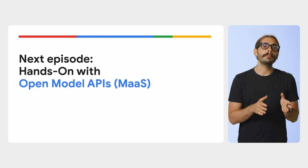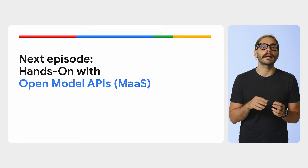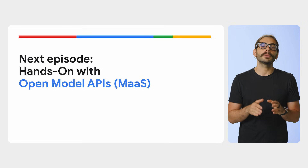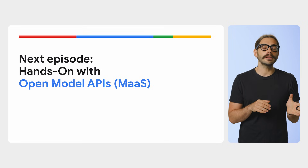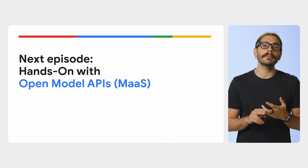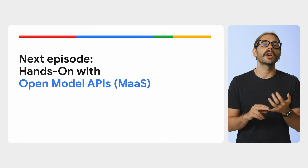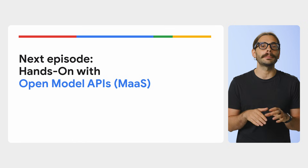Now you have the map, and in our next episode we will start exploring and getting hands-on. We will start with the simplest path — model-as-a-service — and walk you through step-by-step how to find, enable, and call a serverless open model API for your application. If you don't want to miss that, or the rest of the series covering self-deployment, custom VLLM containers, and more, don't forget to subscribe to the Google Cloud Developer channel and turn on notifications.